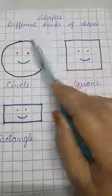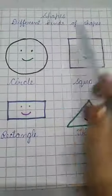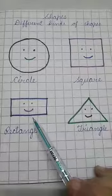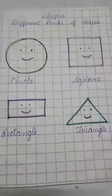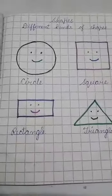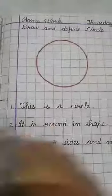You already know there are different kinds of shapes: circle, square, rectangle, triangle, and there are many more. And today we are going to start with the shape of circle.